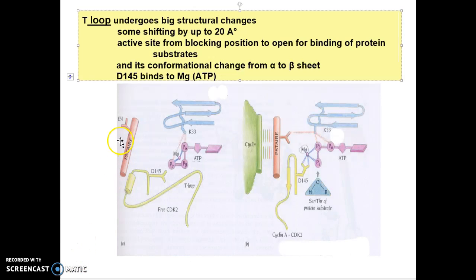T loop undergoes big structural changes: yellow one in inactive form, blue in active. Cyclin binding induces this kind of dramatic changes. PSTAIRE again flips so that active site E51 interacts with, making some salt bridge with another active site lysine 33.